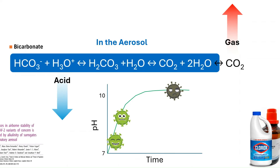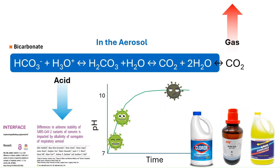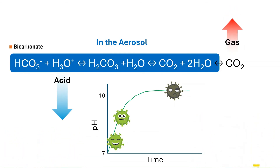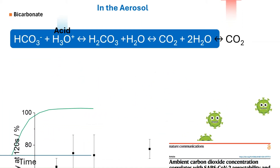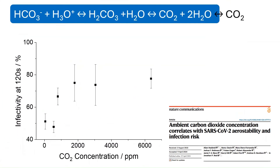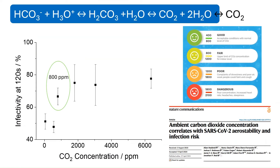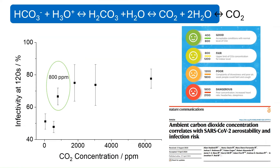Anything that affects the high pH of the aerosol will affect the rate of viral decay. Specifically, if the CO2 in the room is higher, less CO2 will leave the aerosol, resulting in less acid leaving as well. As a result, the pH of the aerosol won't get as high and less virus will be inactivated. As little as 800 ppm CO2 — which is thought to be pretty well ventilated — is actually enough to affect the air stability of SARS-CoV-2.